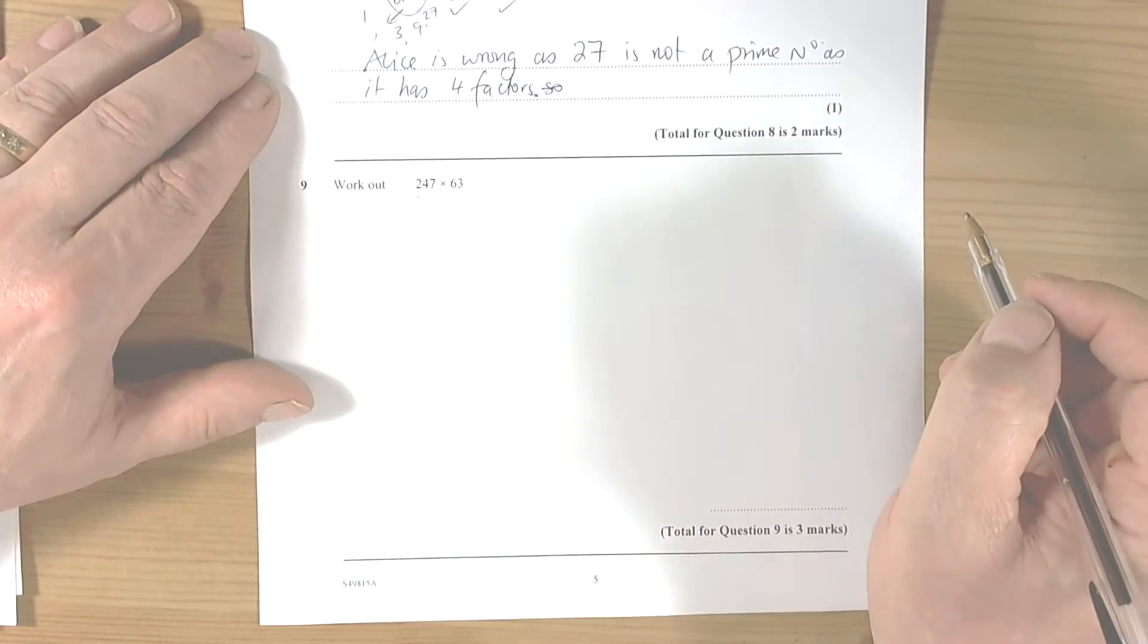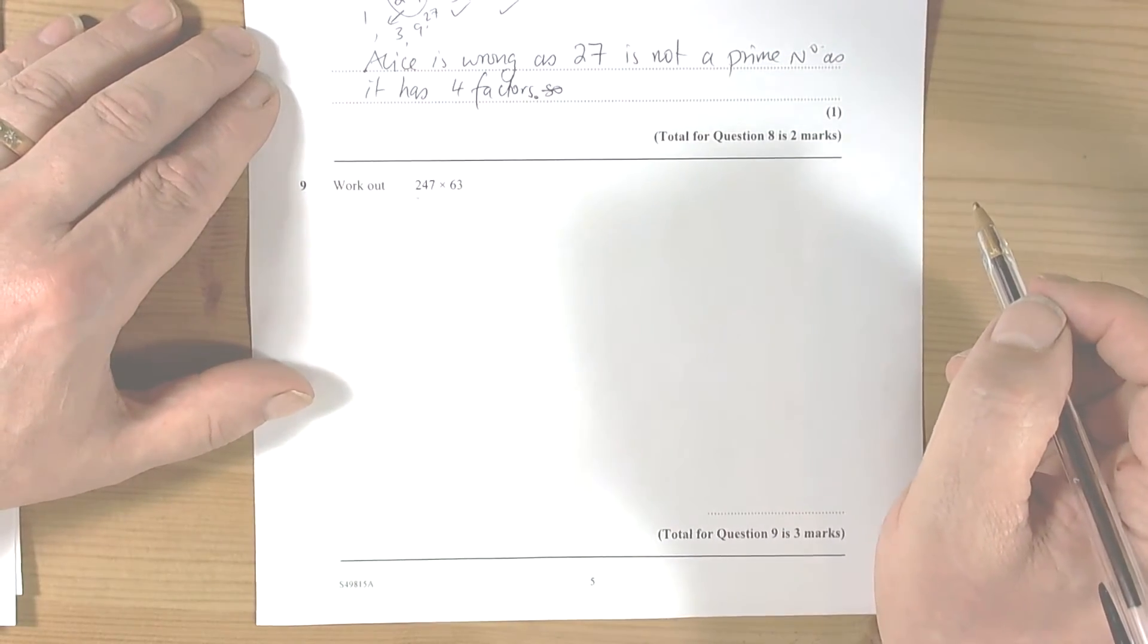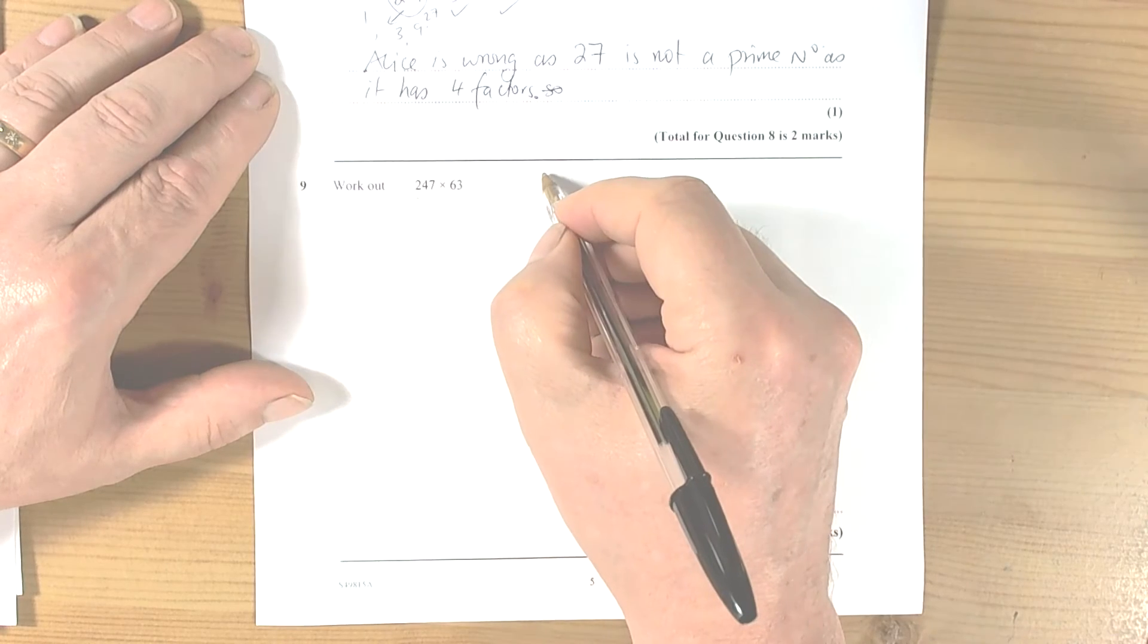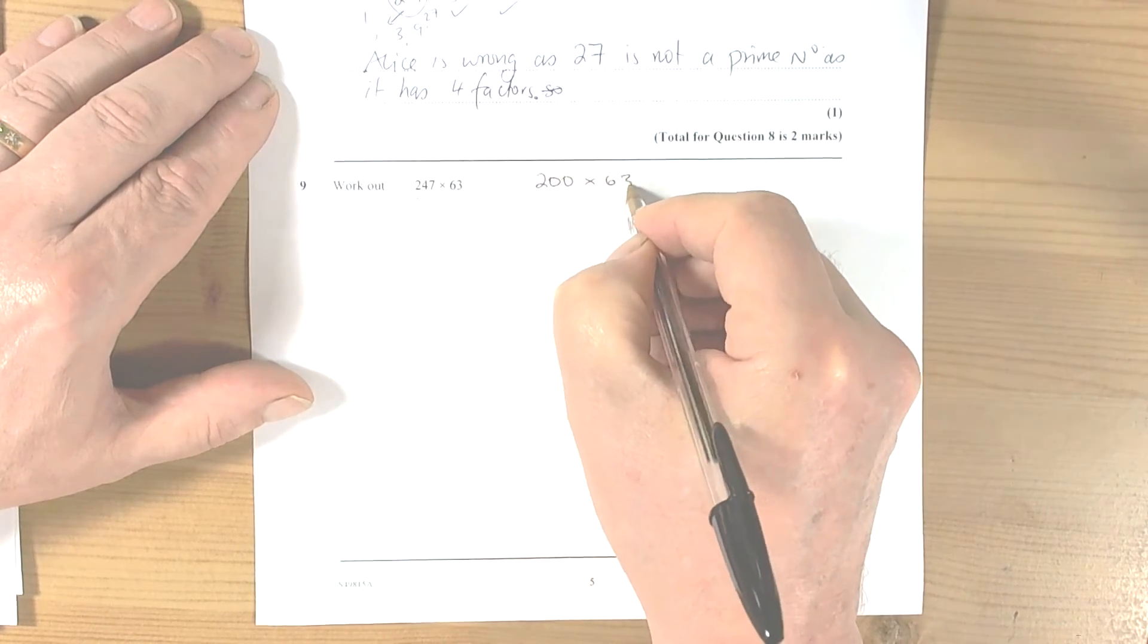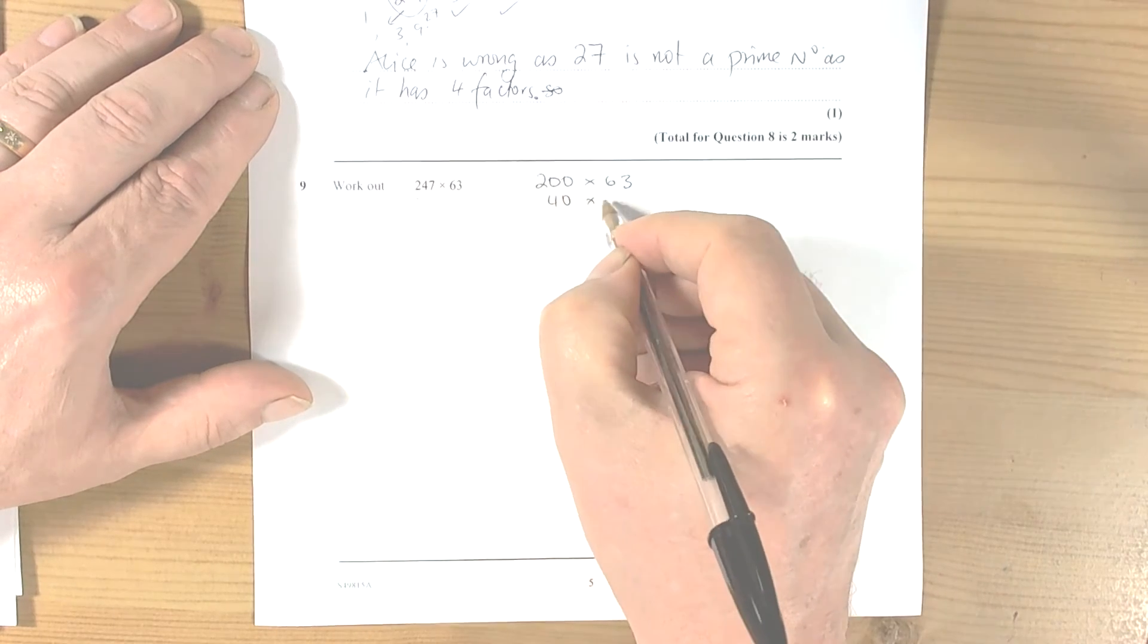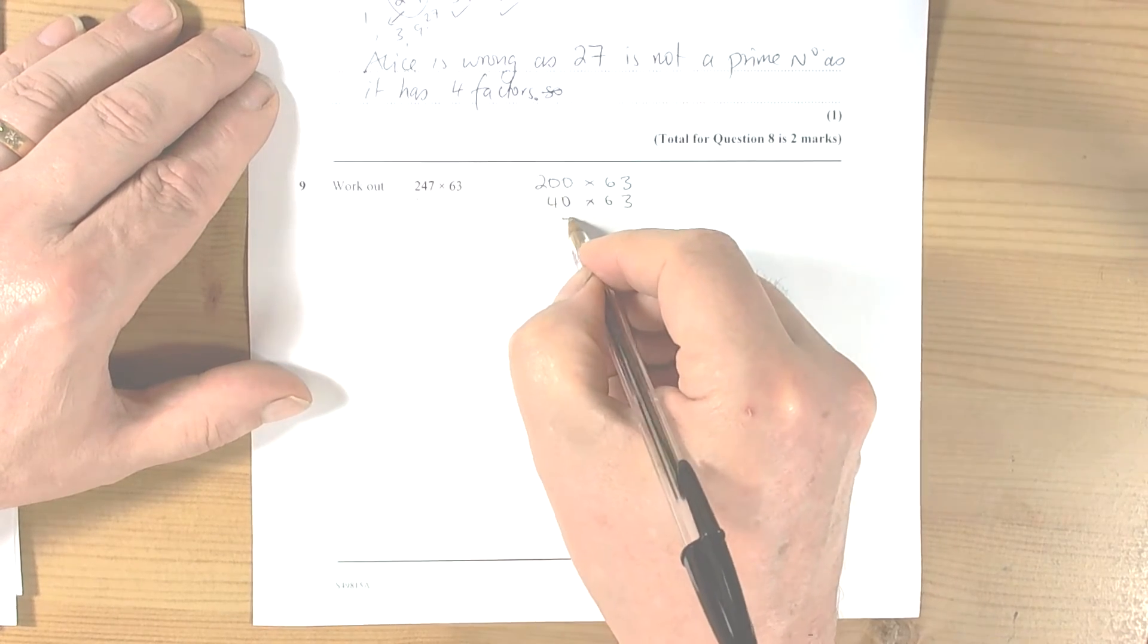I'll do a couple just to kind of remind you of ways of doing this. So we could break up 247 into its component parts. So 200 times 63, 40 times 63, and 7 times 63.